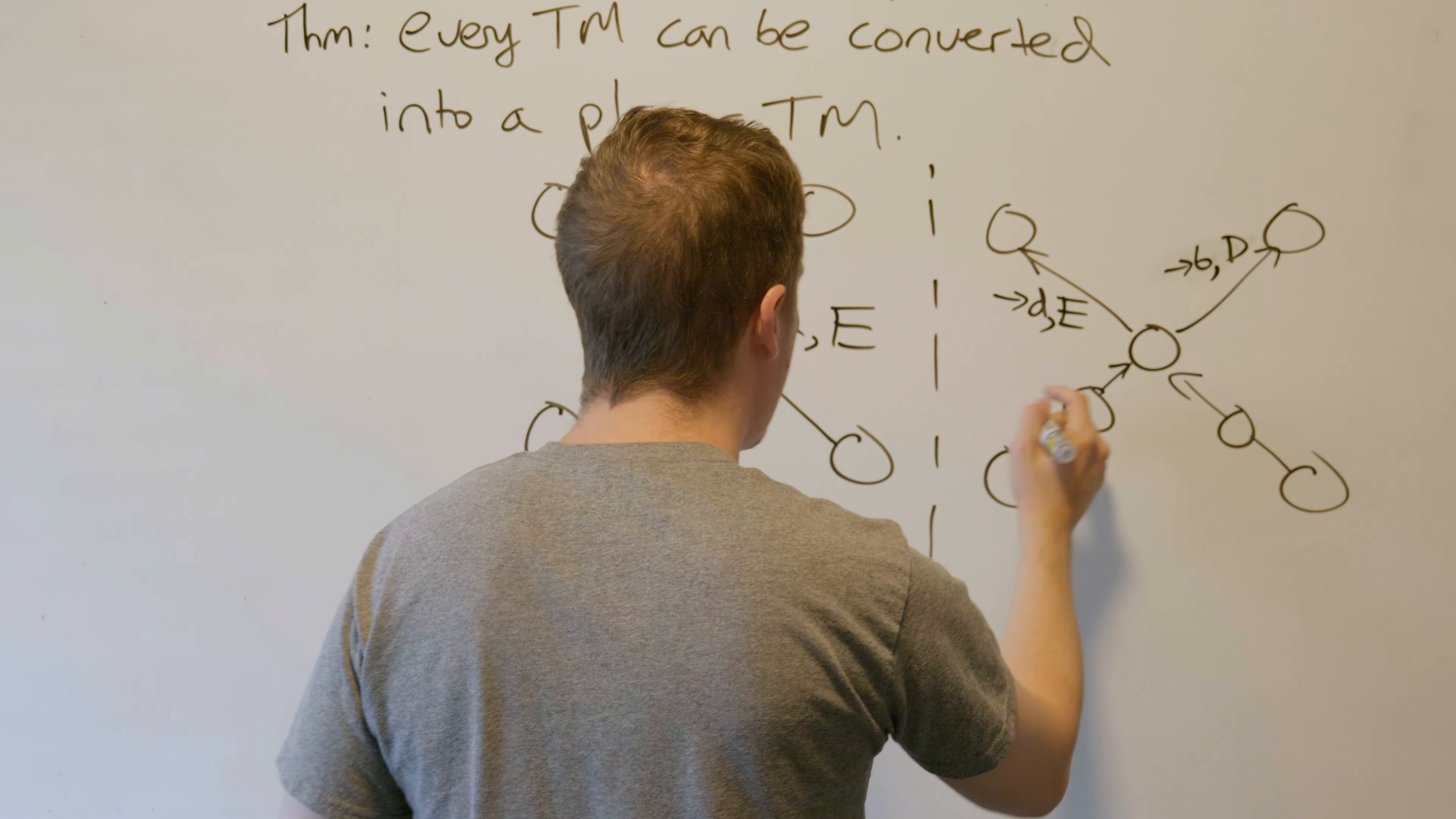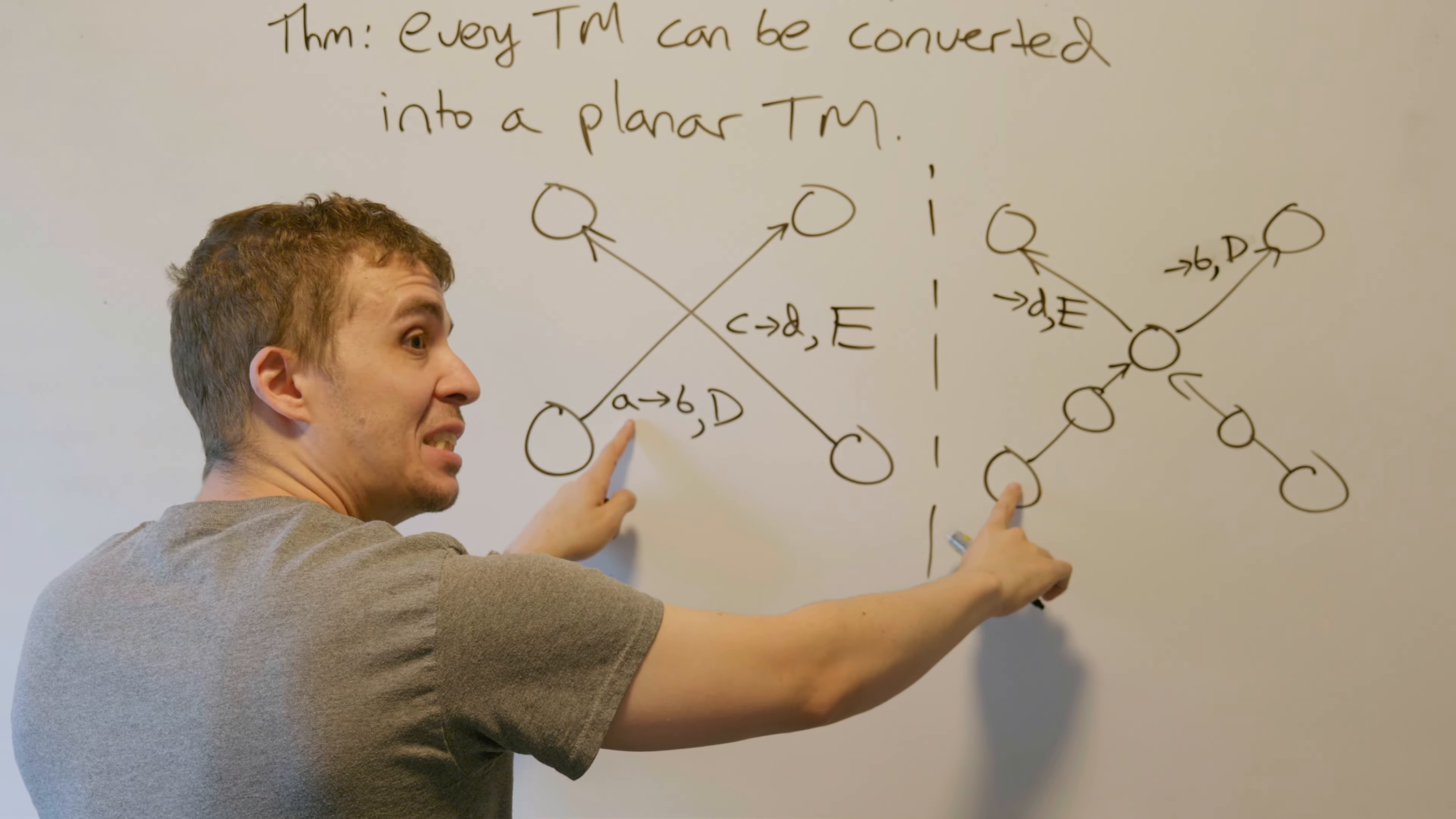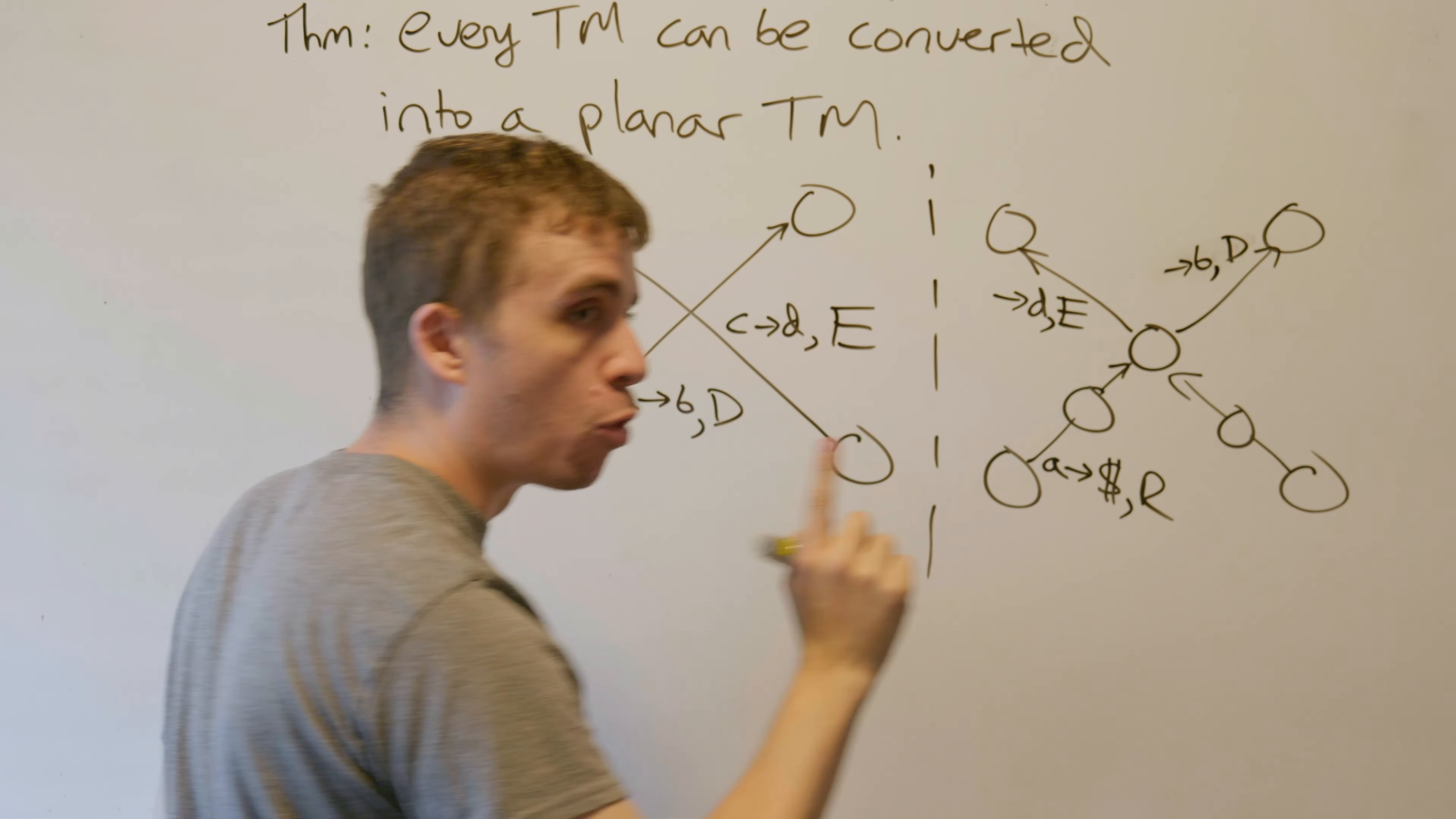What we're going to do up here is that in this state, we're supposed to be reading an A and originally changing it to a B. So instead now, I'm going to read an A and change it to a dollar sign and always move right.